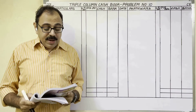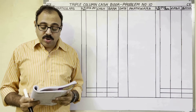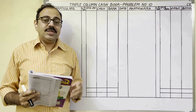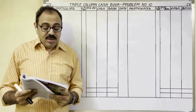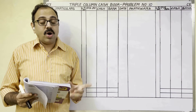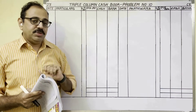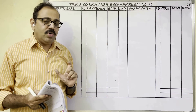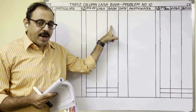Prepare a cash book with cash, bank, and discount columns from the following transactions. Instead of using the term 'triple column cash book,' he is giving 'cash, bank and discount column cash book' — but it means the same thing, because in this book only we have the discount column, cash column, and bank column.